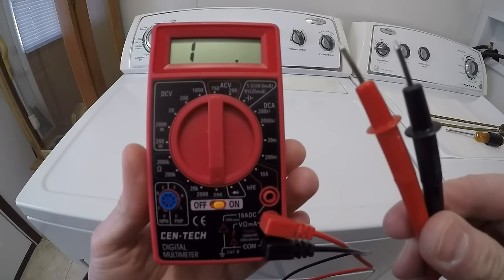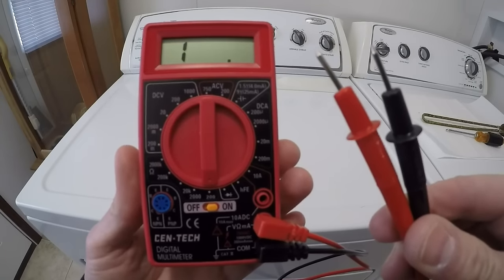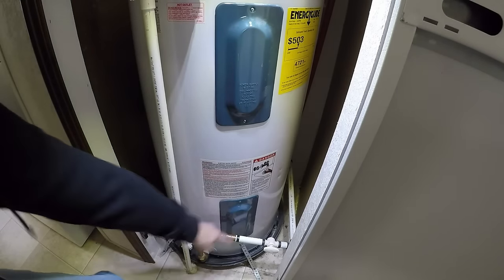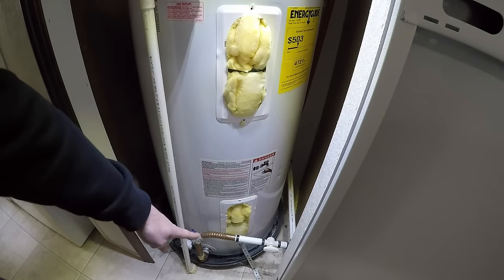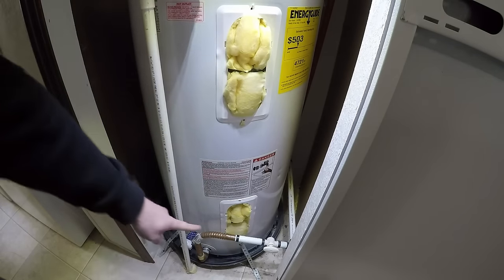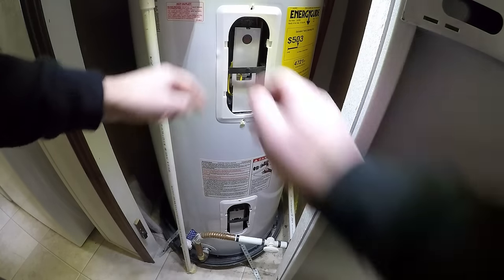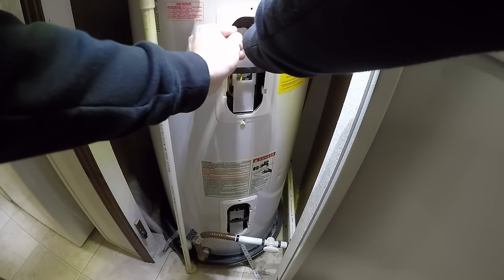You're going to need one of these digital multimeters. You need to remove the top panel and the lower panel. After removing both panels, you need to remove the insulation. After removing the insulation, then you remove these plastic shields. They just kind of snap in there.